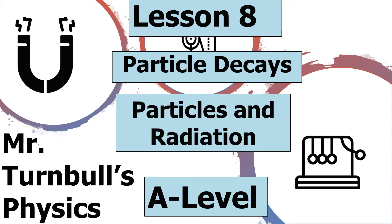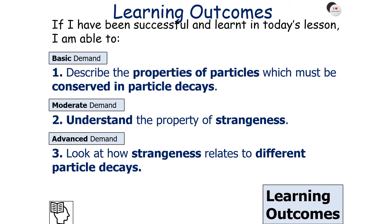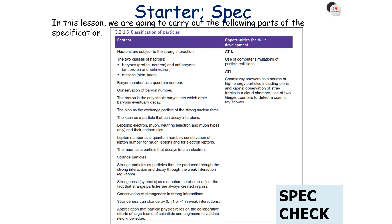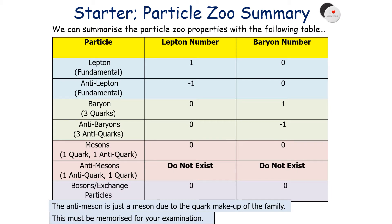In today's lesson, we're going to look at understanding if particle decays occur. If we're successful in today's lesson, we should be able to describe the properties of particles which must be conserved in particle decays, understand the property of strangeness, and look at how strangeness relates to different particle decays, which is part of the AQA A-level physics specification in particles — specifically the classification of particles and the application of conservation laws.